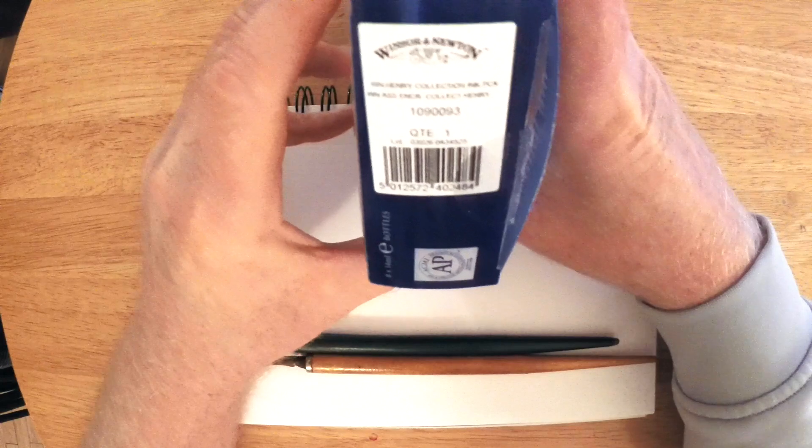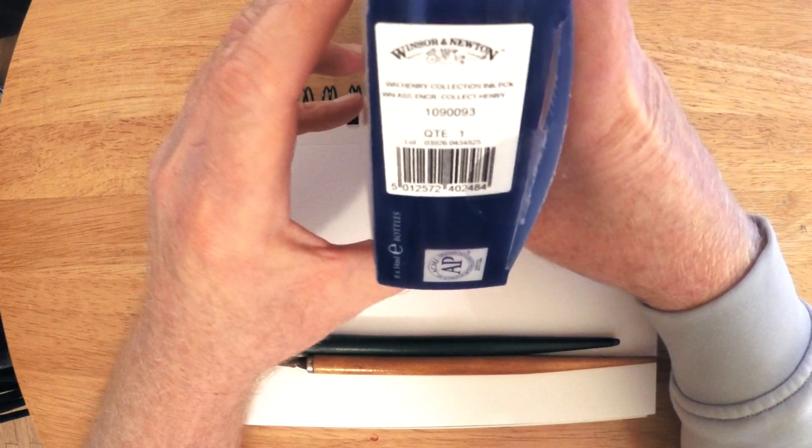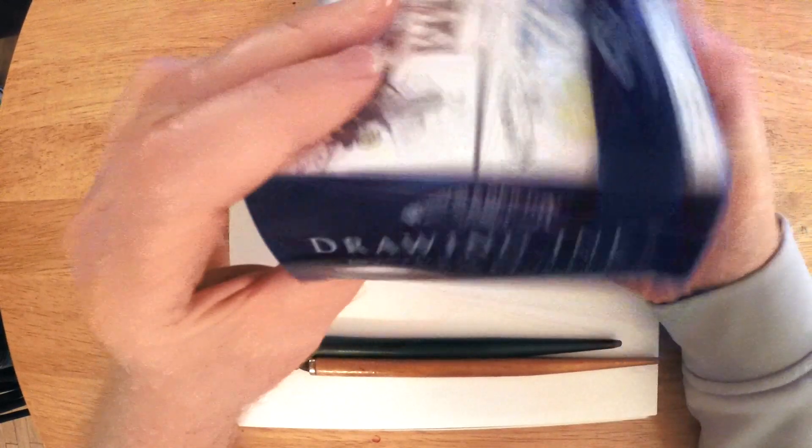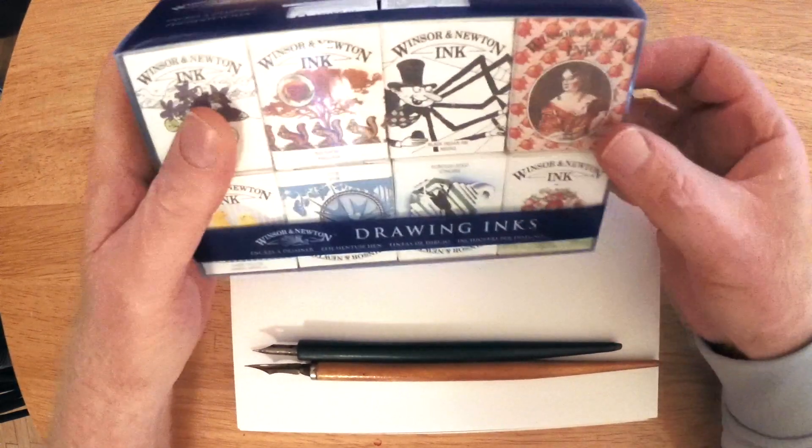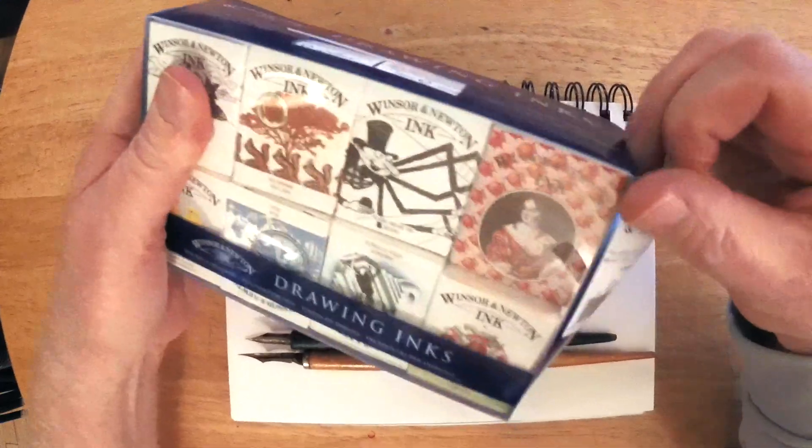This is an ink assortment called the Henry Collection. It comes in this plastic box, and it comes with an assortment of eight different colors of ink.